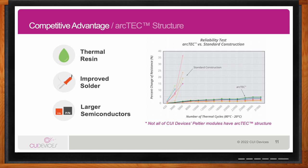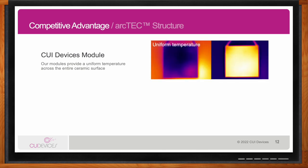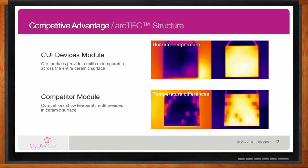Not all CUI Devices Peltier modules have the ARC tech structure. For very small Peltiers — generally 15 mm or smaller — you don't need this feature because thermal stress from expansion and contraction is minimal due to the small number of thermocouples inside. CUI Devices also uses particularly large semiconductor pellets, which creates a uniform temperature across the surface of the Peltier module. Thermal camera images of CUI Devices modules show the ceramic at essentially the same temperature across the entire surface, which is due in large part to the larger pellets.